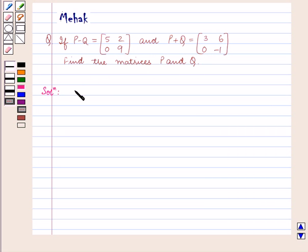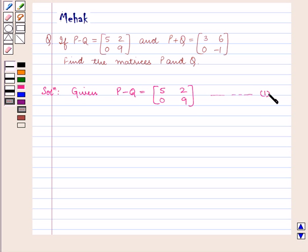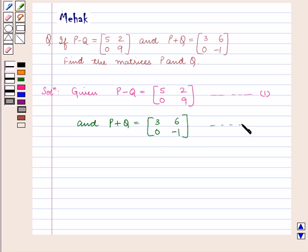We are given P minus Q is equal to the matrix [[5, 0], [2, 9]]. Mark this as equation 1. And P plus Q is equal to [[3, 0], [6, -1]]. Mark this as equation 2. Now let us add equation 1 and equation 2.